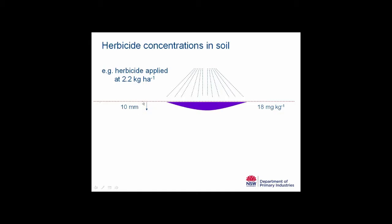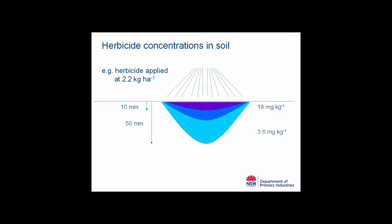For example, a number of authors suggest that glyphosate might only be distributed through the top centimetre of soil, giving a concentration of 80 mg per kg. However, over time with rain, irrigation and other soil processes, the herbicide will move through the soil, decreasing concentration. If a more mobile herbicide distributes through the top ten centimetres, a herbicide applied at 2.2 kg per hectare moving through the top ten centimetres will have a concentration ten times lower than in the top centimetre.